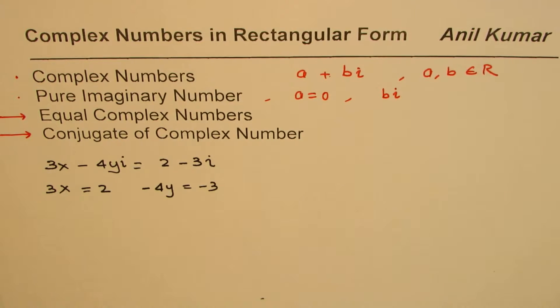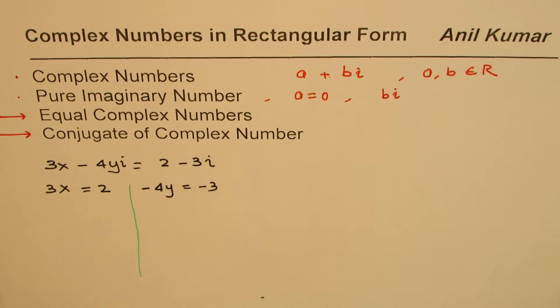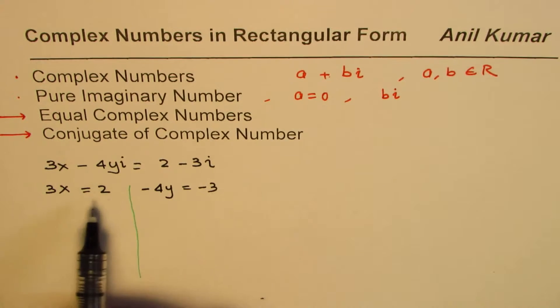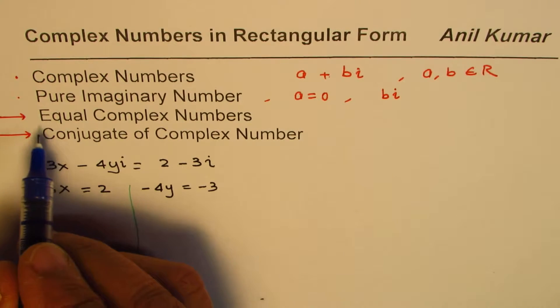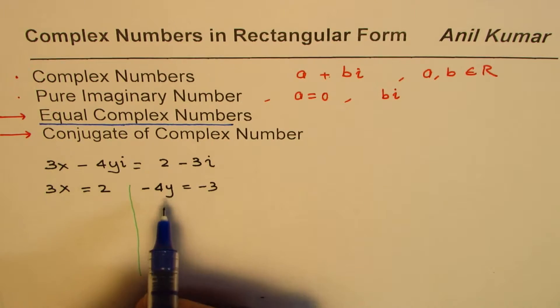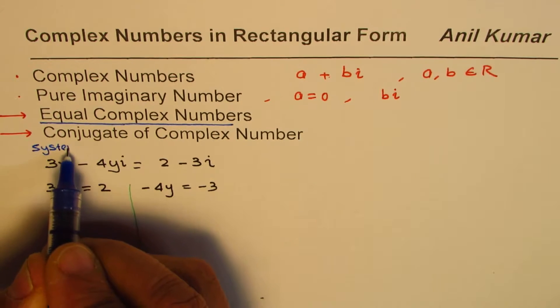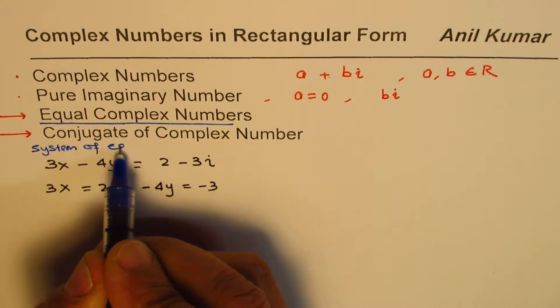This always helps us to find the values of x and y, the unknowns. From here we'll get two equations to work with. Whenever we are working on equal complex numbers, you may get into situations where we may have a system of equations to work with.